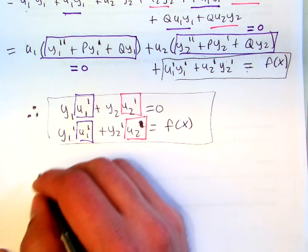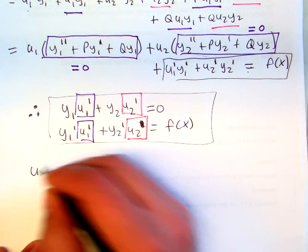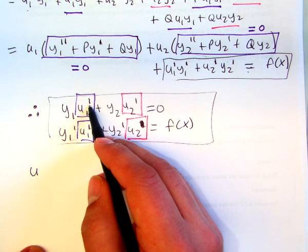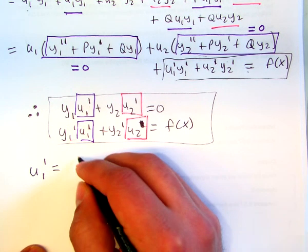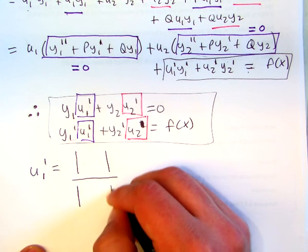It will be one quick way of doing this. And if you forgot Cramer's rule, we'll just quickly go through it here. Okay, so if I wanted to find our quote-unquote x here, which is really u1 prime, we do two determinants.